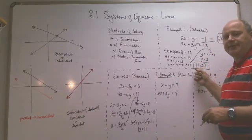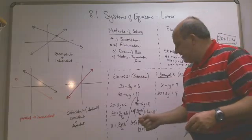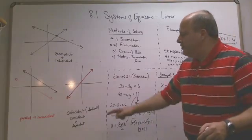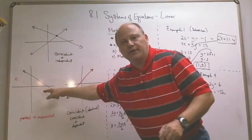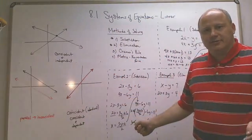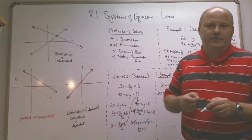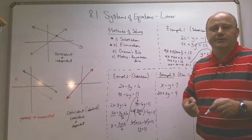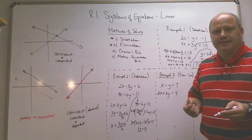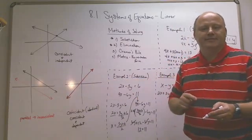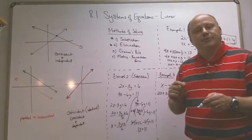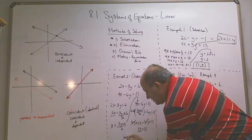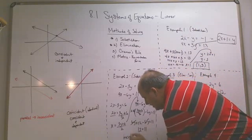You get the statement 12 equals 11, which is never true. In the previous example I was able to isolate a variable; this time it canceled out. This scares people — they think they've done something wrong. But in reality you've got two parallel lines, because there is no intersection point. So this system is inconsistent — no solution.